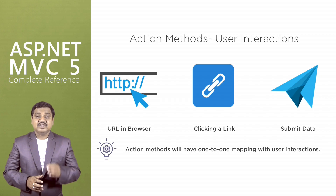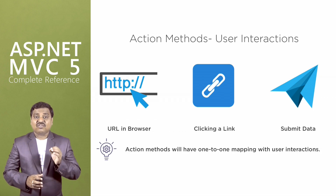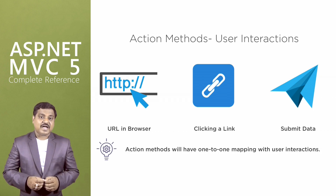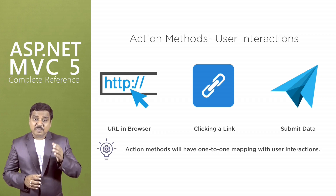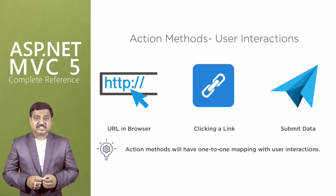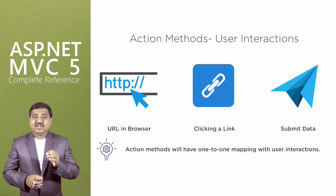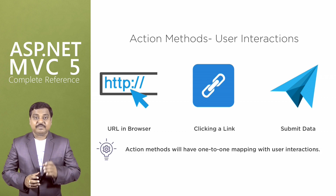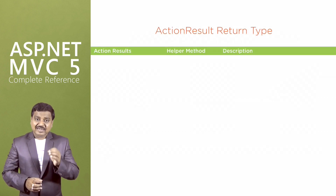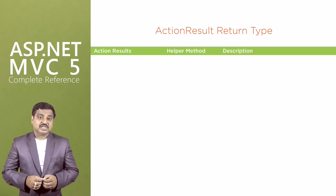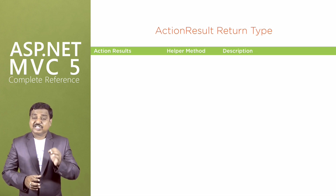Most action methods return an instance of a class that derives from action result. The action result class is the base for all action results, and we have been provided with different action result types that can be used as per the requirement. Now let us understand the various built-in action result types and the action helper methods that return them.